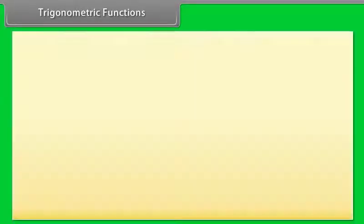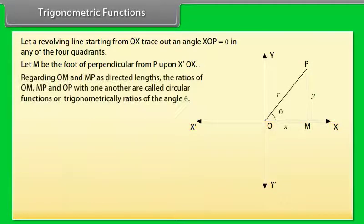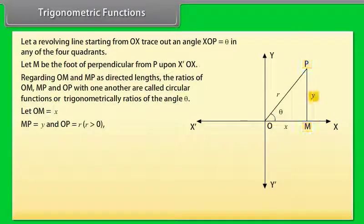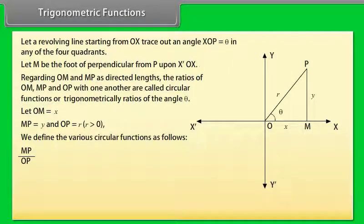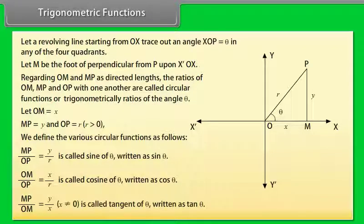Trigonometric functions. Let a revolving line starting from OX trace out angle XOP = θ in any of the four quadrants. Let M be the foot of the perpendicular from P upon X-OX. Treating OM and MP as directed lengths, the ratios of OM, MP and OP with one another are called circular or trigonometric functions of angle θ. Let OM = x, MP = y and OP = r (r > 0). Then: sinθ = y/r, cosθ = x/r, tanθ = y/x (x ≠ 0).